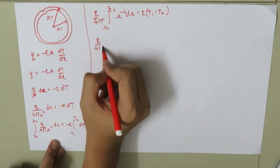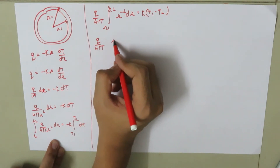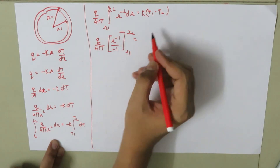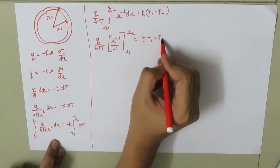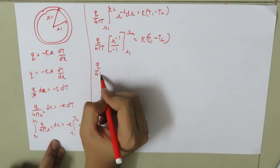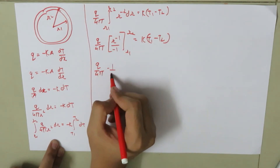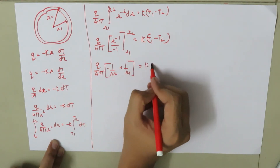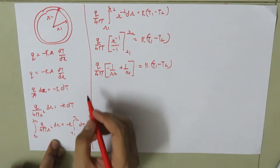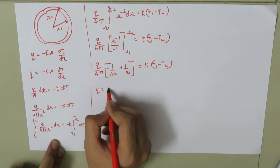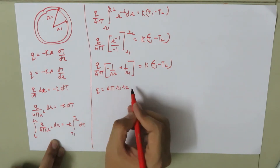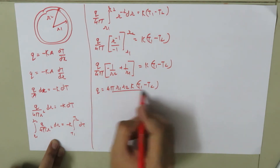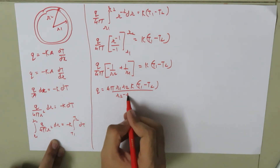Evaluating the integral: Q upon 4π times [r to the power negative 1 upon negative 1] from R1 to R2 equals K times (T1 minus T2). This gives Q upon 4π times (negative 1 over R2 plus 1 over R1) equals K times (T1 minus T2). So we get Q is equal to 4π R1 R2 K times (T1 minus T2) divided by (R2 minus R1).